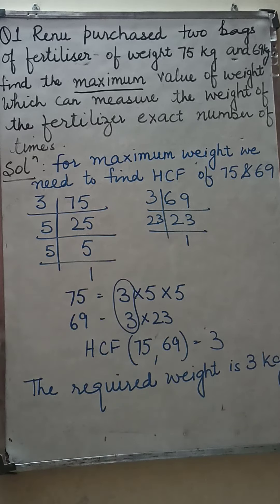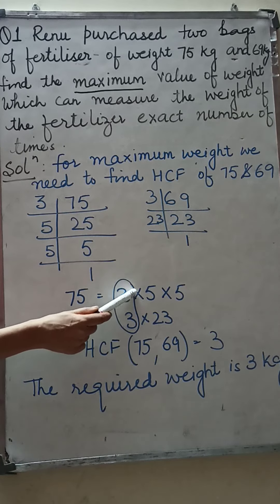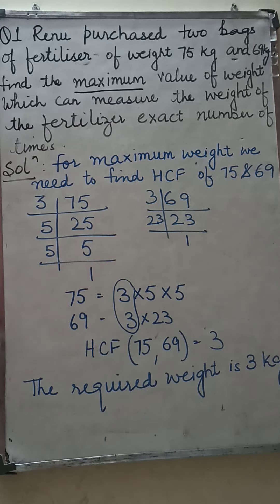Now factors of 75: 3 into 5 into 5. Factors of 69: 3 into 23. What is common in both? Only 3. So highest common factor is 3.